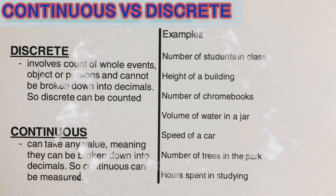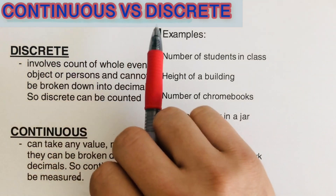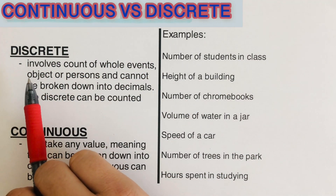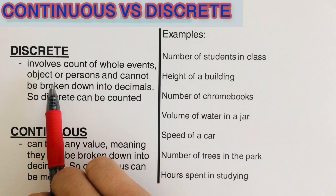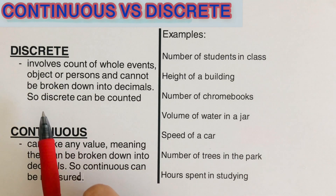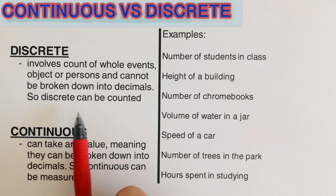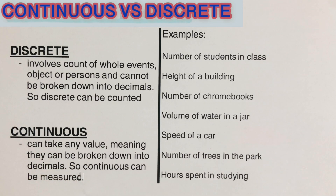Hello everyone. In this video we are going to determine the difference between continuous and discrete. Discrete by definition involves a count of whole events, objects, or persons, and cannot be broken down into decimals. Continuous can take any value, meaning they can be broken down into decimals.